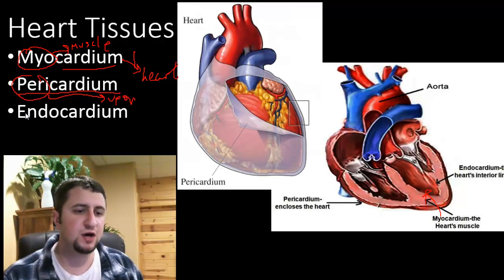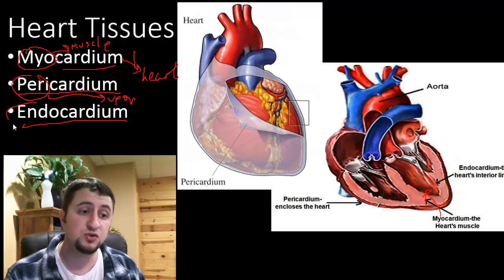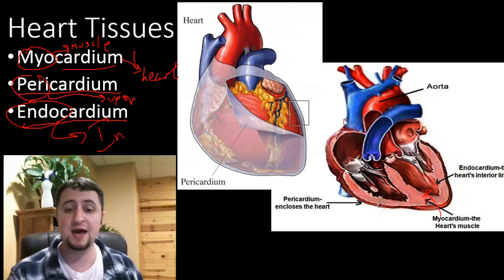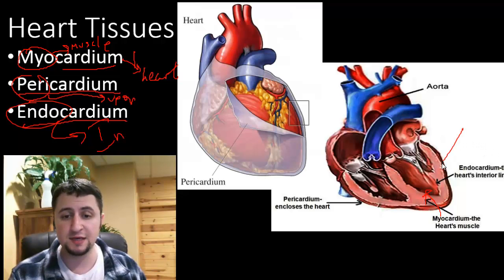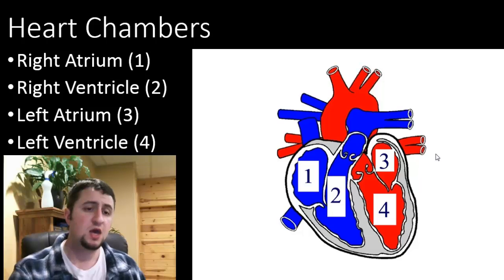The next type of tissue we're going to talk about is the endocardium. Again, use your root words here. Endo means in or inside. The endocardium is the tissue that's on the inside of the heart.